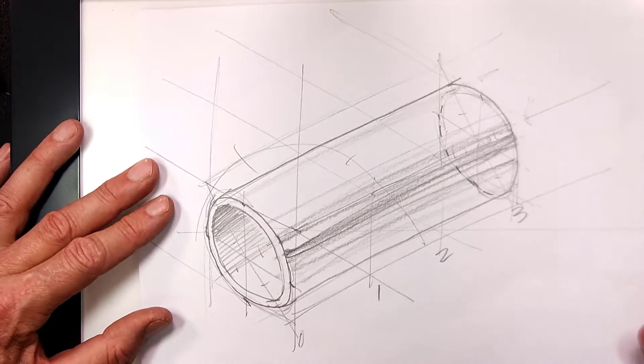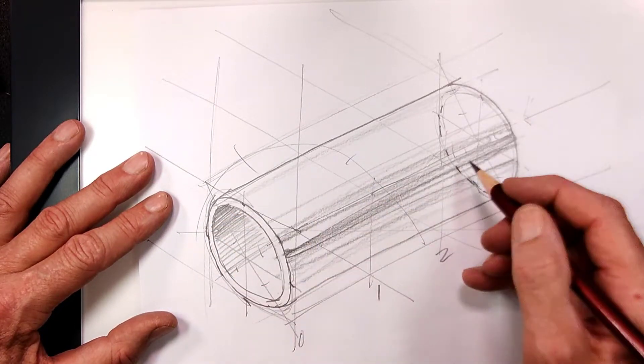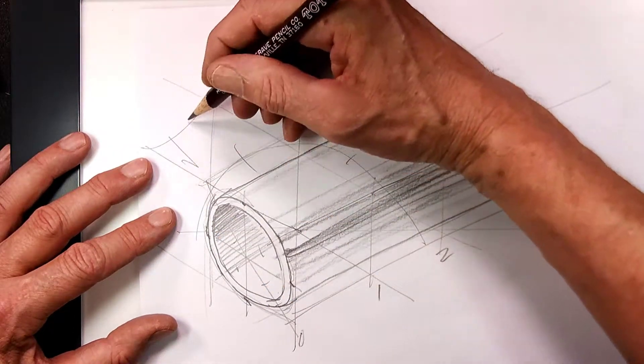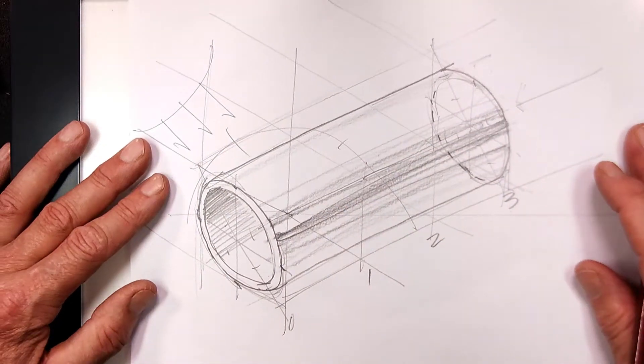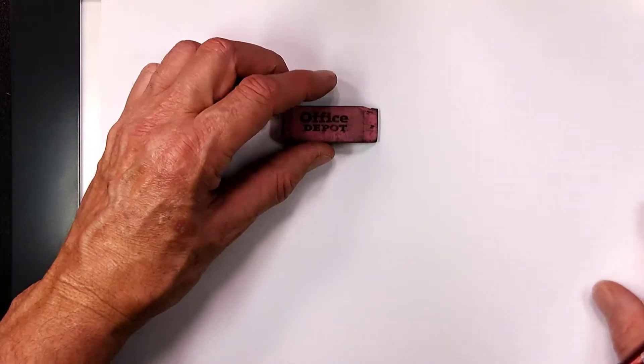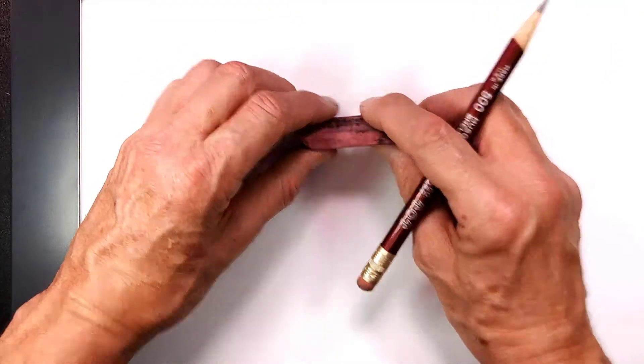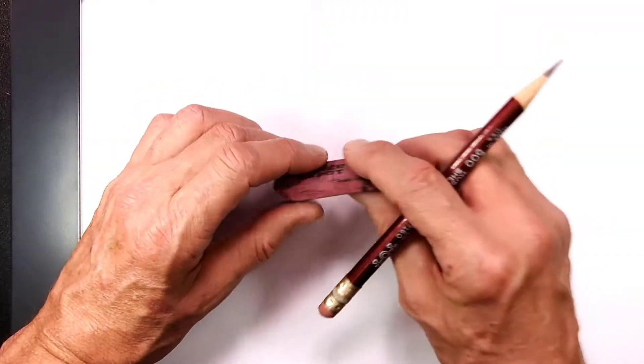What I have just done is to draw this cylinder and I've added some shading here because my light source is coming from approximately 10 or 11 o'clock right there. The next thing I'm going to do is to draw an isometric of this. This is an office depot eraser.